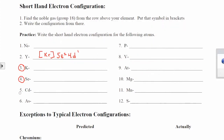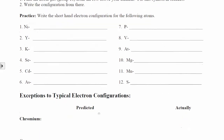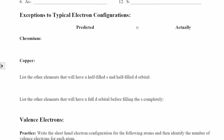Now we're going to move on and I'm going to explain a couple of the exceptions to the electron configuration rule. I'm going to show you what the electron configuration for chromium should be based on what we've learned so far, and then show you what it actually is.